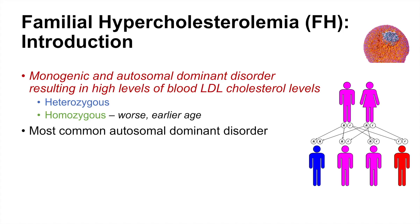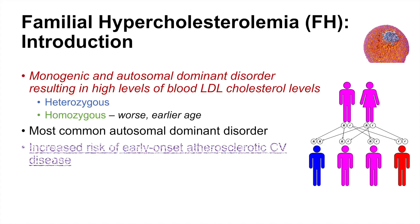Familial hypercholesterolemia is the most common autosomal dominant disorder. It is extremely important because it increases the risk of early onset atherosclerotic cardiovascular disease.